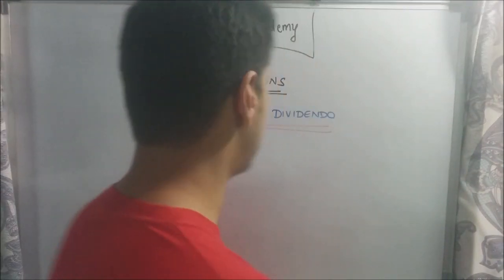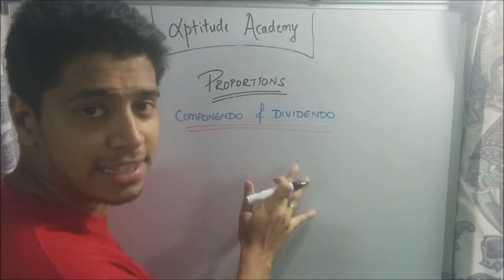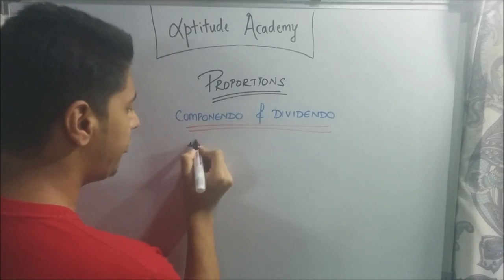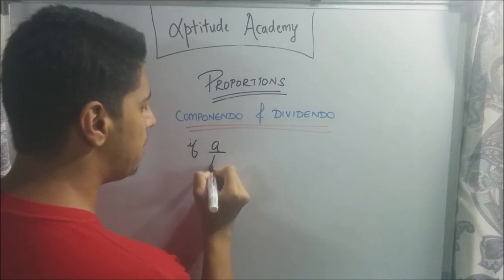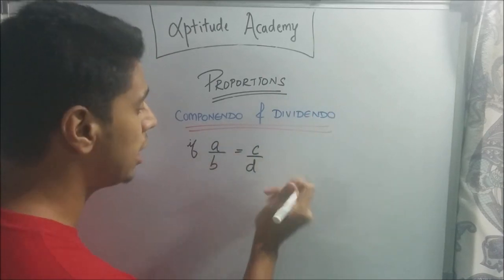Another very important rule in proportions is known as the Componendo and Dividendo rule. This is the fanciest name you will come across in your aptitude studies. So, it basically says that if you have A by B is equal to C by D, that is the definition of a proportion, then...